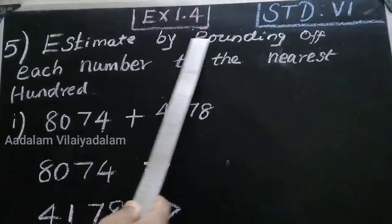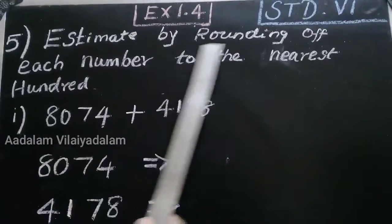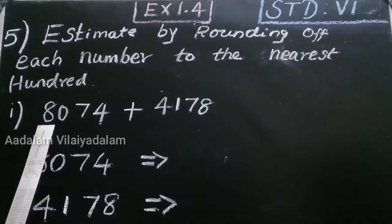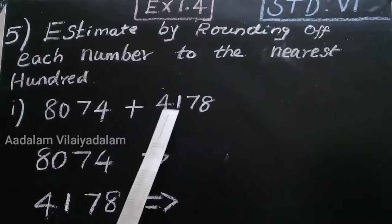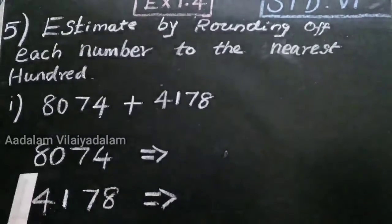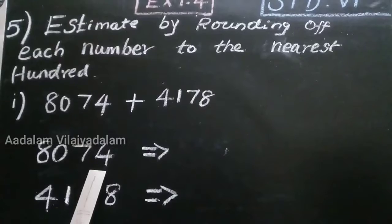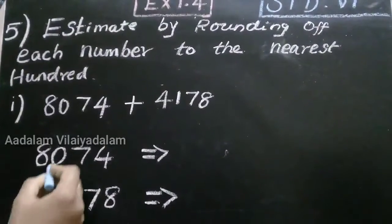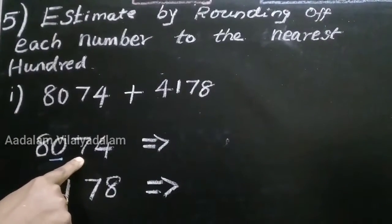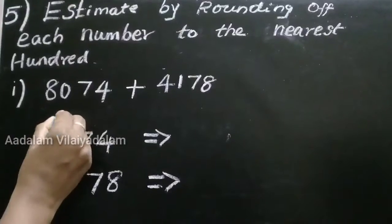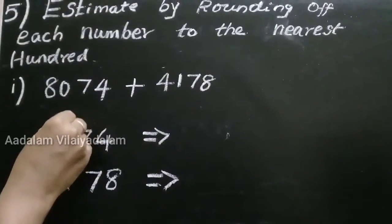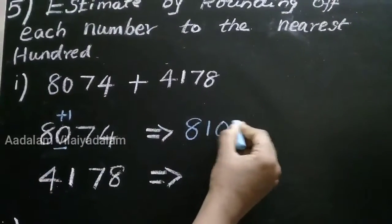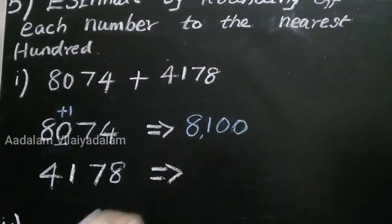Next question: estimate by rounding off each number to the nearest 100 place. 8,074 plus 4,178. For 8,074, round off to the nearest 100 place: 1, 10, 100 — this is the 100 place. The next digit is 7, which is greater than 5, so add one number to the 100 digit. The answer is 8,100. Remaining, we put 0. So 8,100 is the round off value.